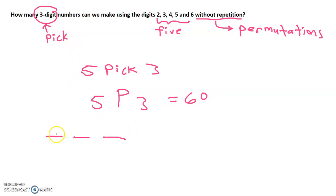For the first number, we have five options. So there are five ways that we can pick the first number. But because we're not allowed any repetition, that means when we get to the second number, there are only four options to choose from.